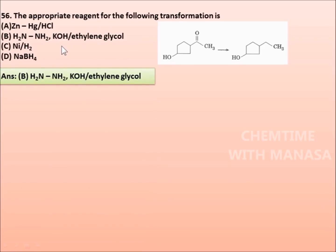Friends, in this reaction, the correct answer is option B. Here, carbonyl group is converted into CH2 group. Means the appropriate reagent is either option A or option B. Here, option A means it is Clemmensen reduction. Option B means it is Wolf-Kishner reduction.